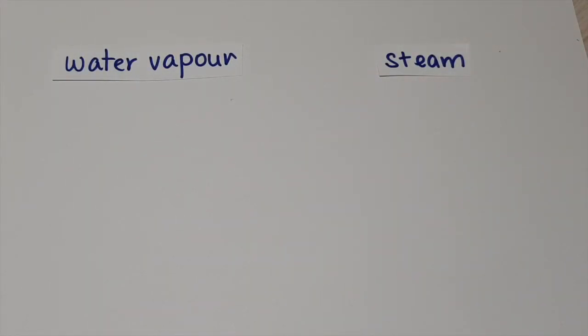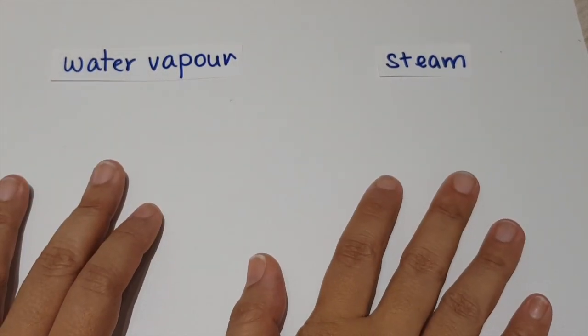In this video, we are going to learn about water in the forms of water droplets, water vapor, and steam. So first, let's look at water vapor and steam.